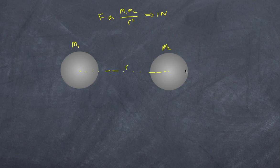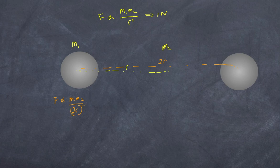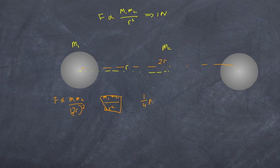What would happen if I increase the distance between them? Now the distance between them is 2r. The force is of course proportional to m1 m2 over the distance, and now we have 2r, so this becomes squared and we get m1 m2 over 4r squared. Since this was equal to 1 newton, we now have a quarter of a newton in terms of the forces between these two masses.